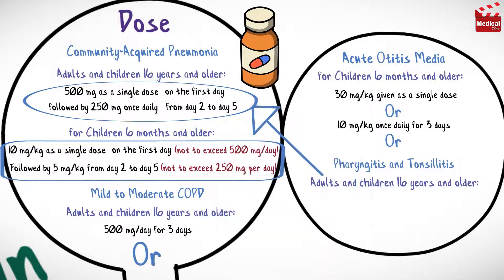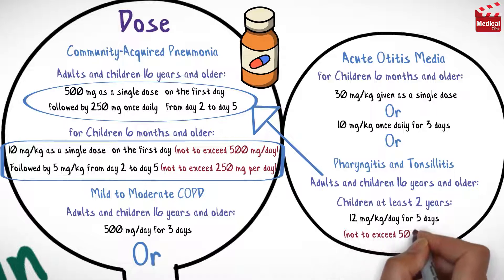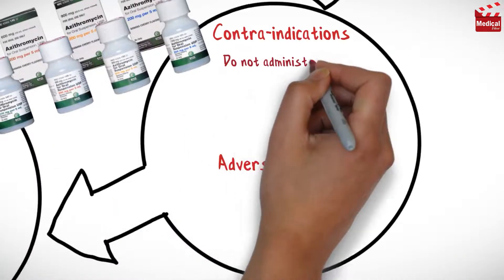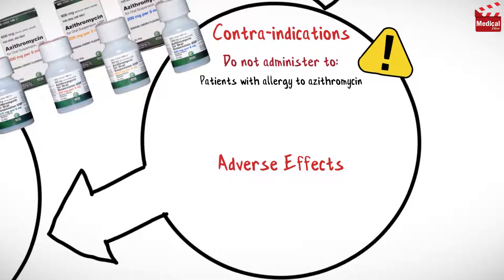The usual dose for pharyngitis and tonsillitis for adults and children 16 years and older is 500 milligrams as a single dose on the first day followed by 250 milligrams once daily from day 2 to day 5. For children at least 2 years, the dose is 12 milligrams per kilogram per day for 5 days.